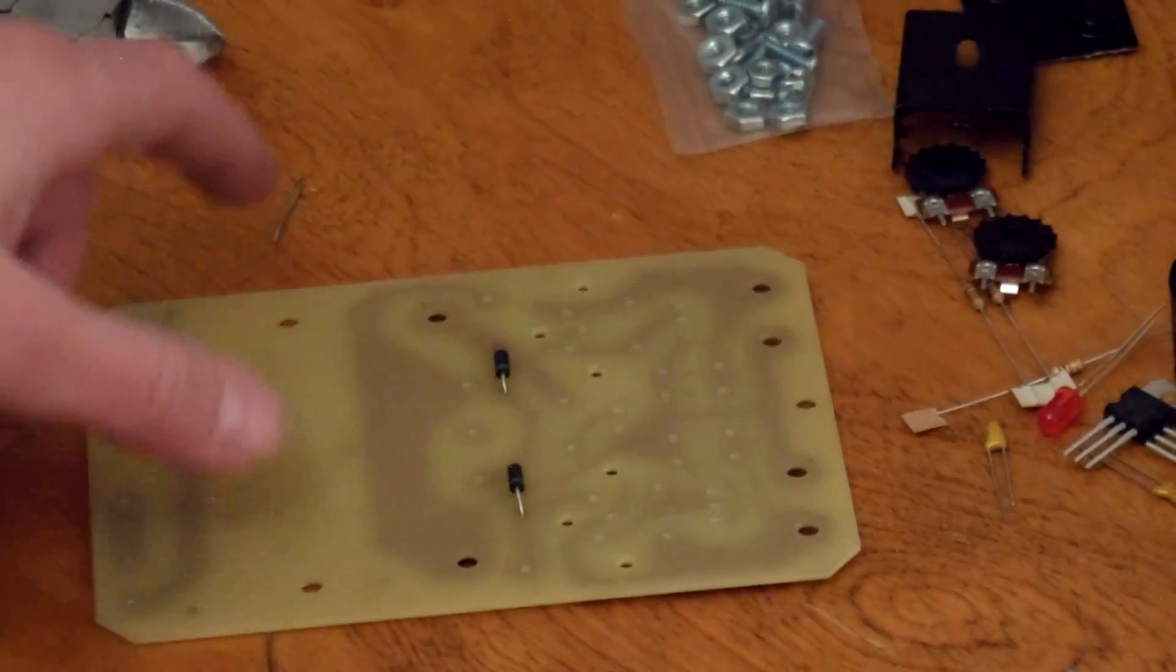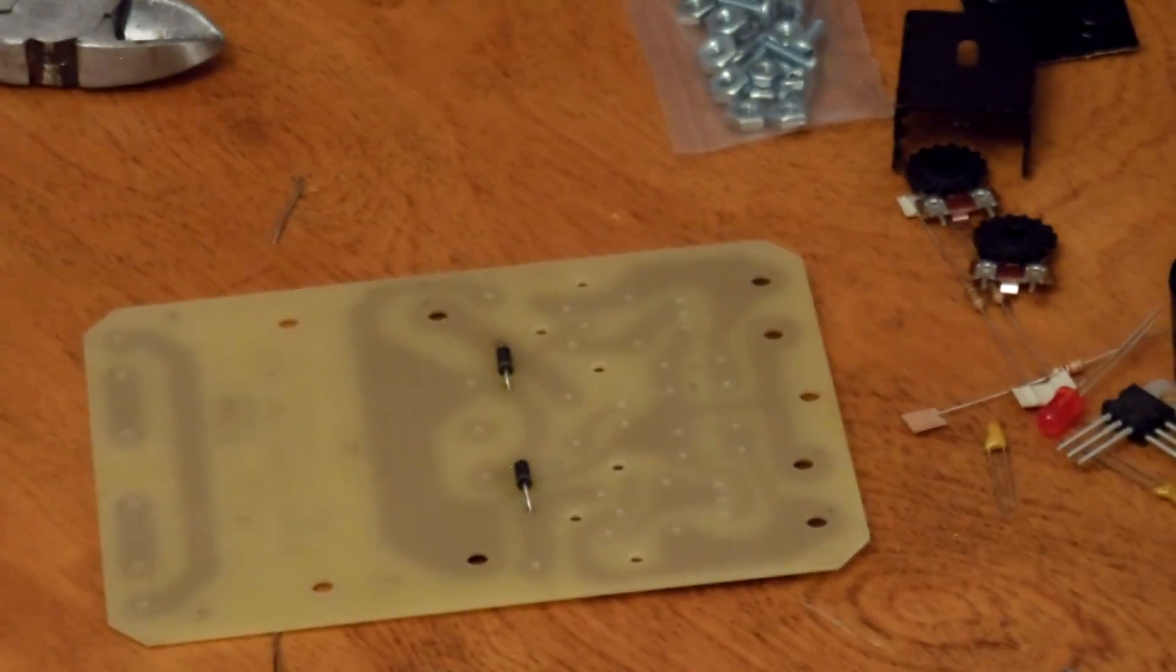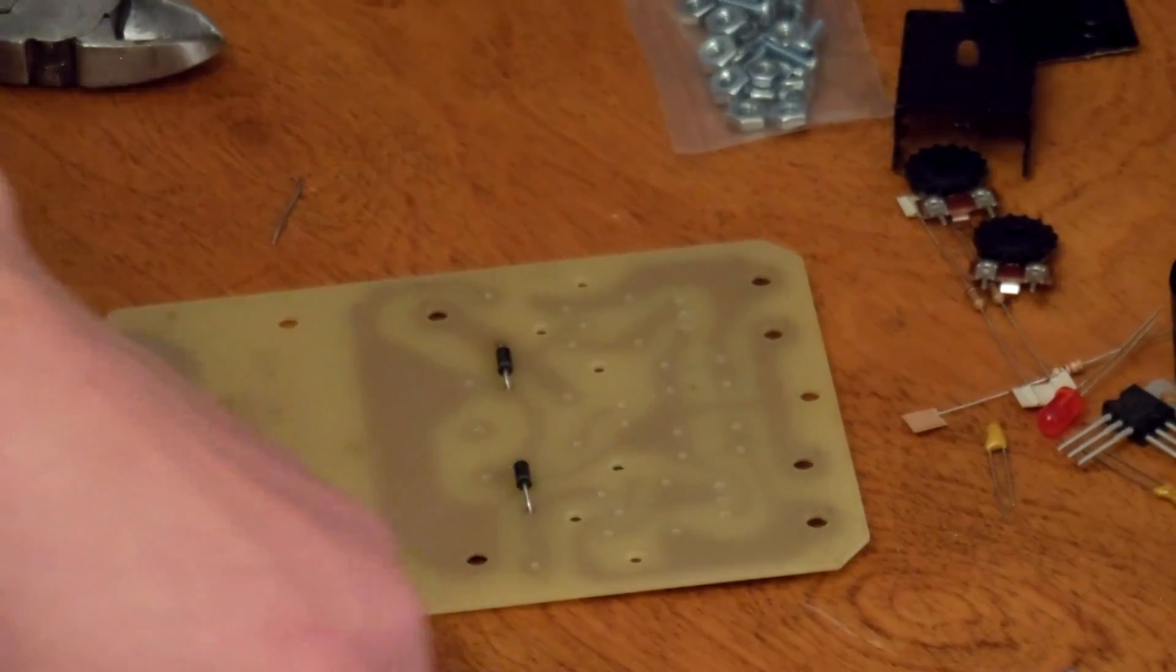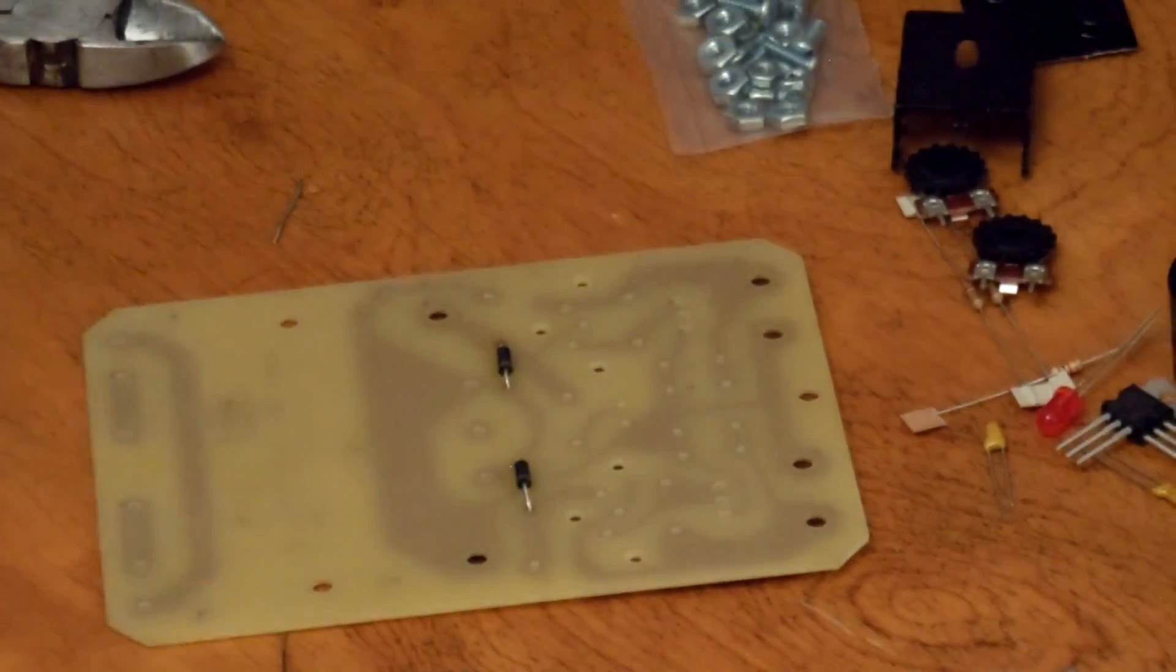When building a project like this, I like to solder all the small parts first. If you solder all the big parts like this capacitor or the transformer, it makes it hard to get in there and solder all the small parts. So I start with the small things like the diodes and resistors, and then work my way up to large things such as capacitors and transformers.